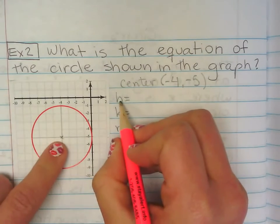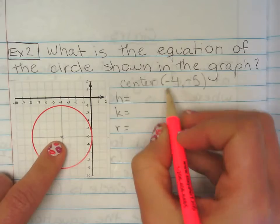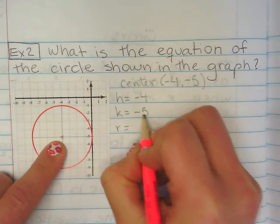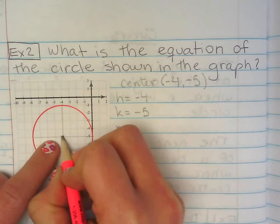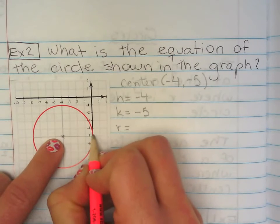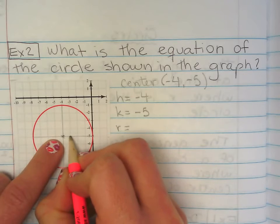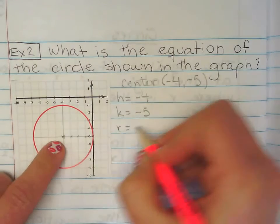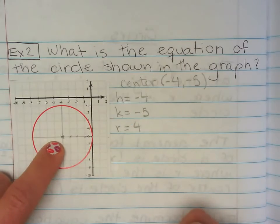h, right here, it's easy because that's the x. So, -4. k, right here, -5. Radius is the distance from the center to the edge of the circle, right here. So, 1, 2, 3, 4. Radius 4 is a piece of cake.